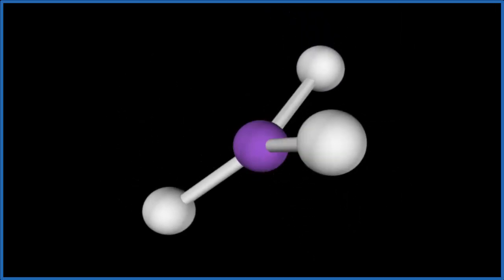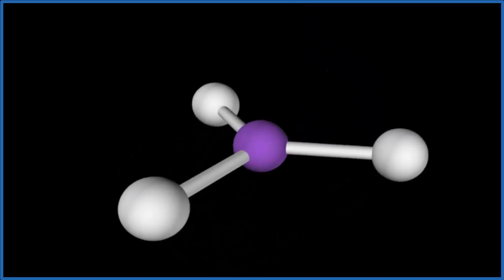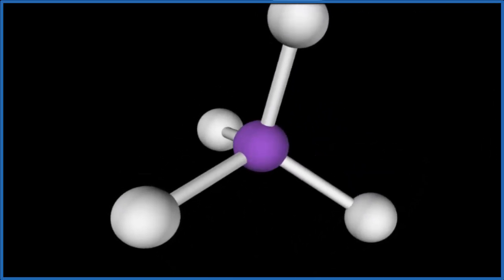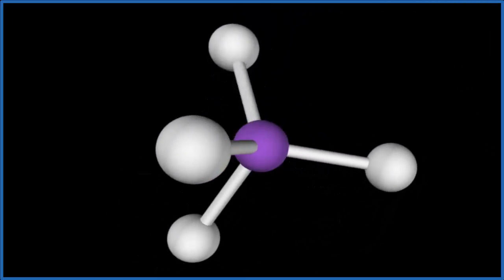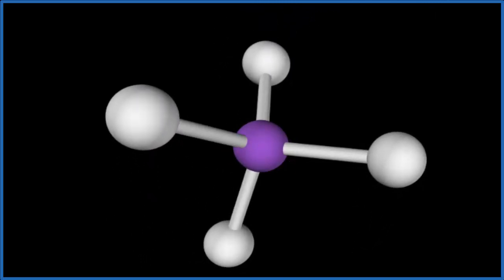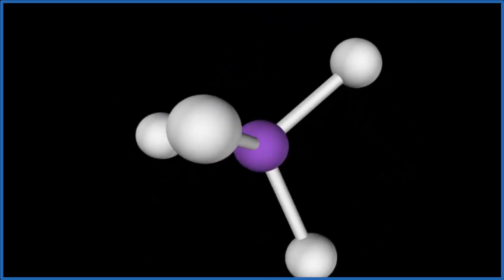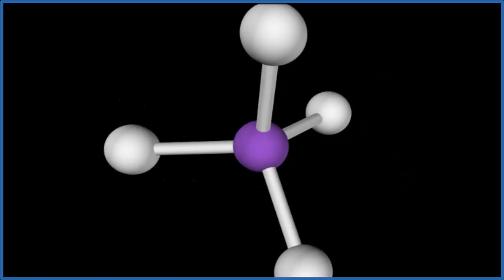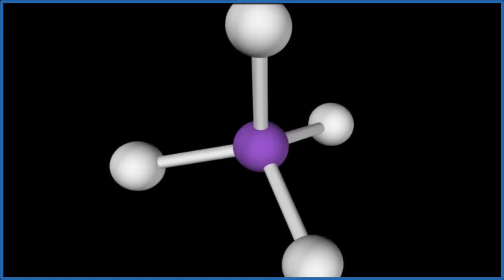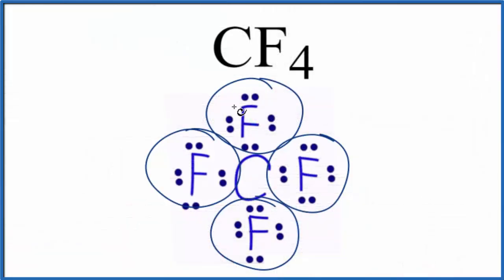But when we add that fourth fluorine atom, we end up with what's called a tetrahedral molecular geometry. So the molecular geometry for CF4 is tetrahedral. The electron geometry is the same as well since there are no lone pairs.